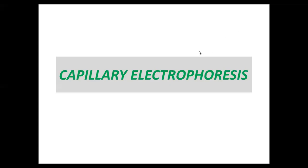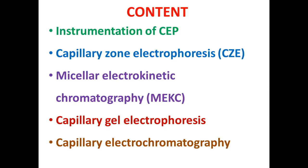Today we continue our discussion on capillary electrophoresis, which is an extended discussion on electrophoresis. Electrophoretic techniques are classified in several ways, and among them, capillary electrophoresis is one of the important techniques widely employed for both qualitative and quantitative analysis. We will concentrate on the instrumentation of capillary electrophoresis. Capillary zone electrophoresis can separate cations and anions, but the principle is not suitable for separation of neutrals.